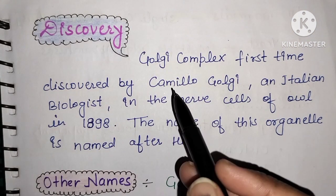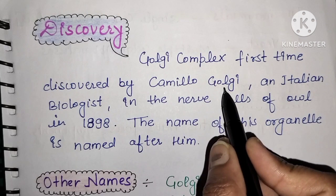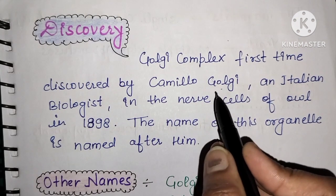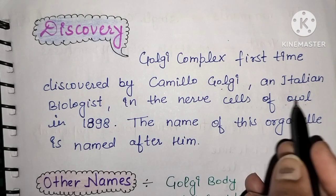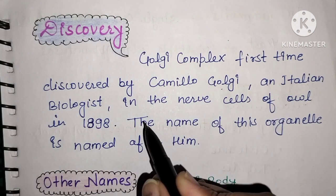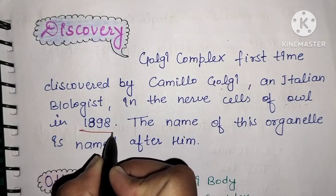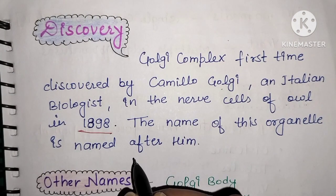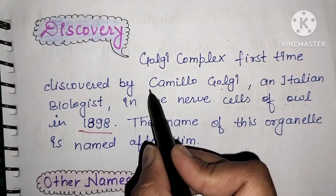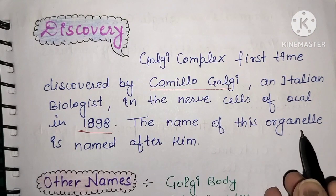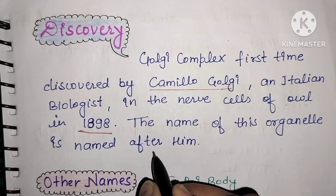Camillo Golgi was an Italian biologist who discovered the Golgi apparatus in 1898. This organelle was named the Golgi apparatus based on his name.